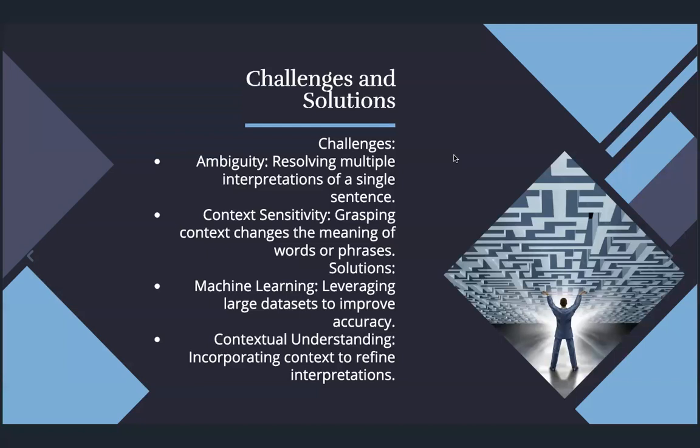Next is machine learning: leveraging large datasets to improve accuracy. We cannot directly remove ambiguity and context sensitivity from natural language, but we can minimize them by providing a large set of data as input. Contextual understanding — incorporating context to refine interpretations — is key.